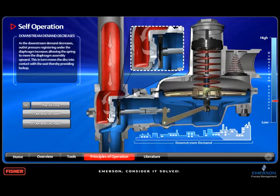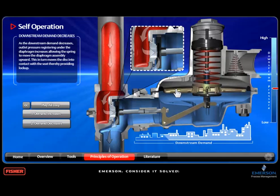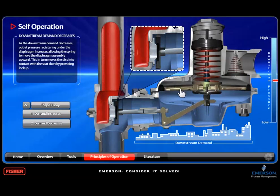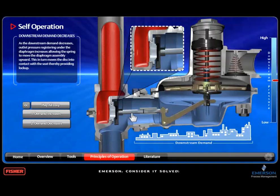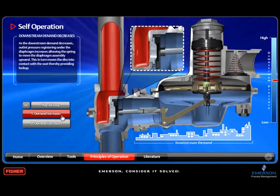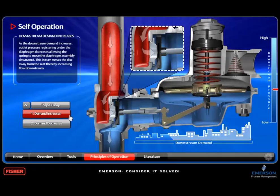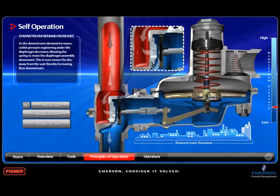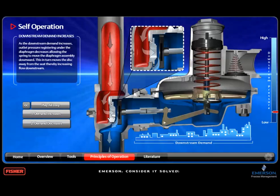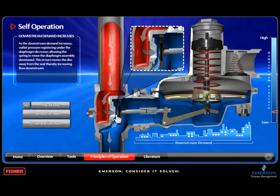The diaphragm will move upward if outlet pressure increases, which will move the valve disc closer to the orifice. The opposite will happen if outlet pressure decreases. As outlet pressure decreases, the diaphragm moves downward, pivoting the lever and pulling the valve disc to the right away from the orifice.